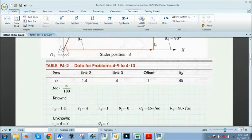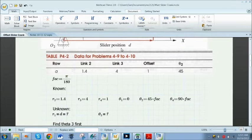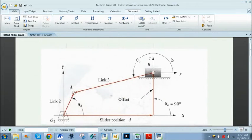The first thing we want to do is find theta 3, and in order to do this we have to eliminate one of our variables. The only other variable we don't know is the slider position D.